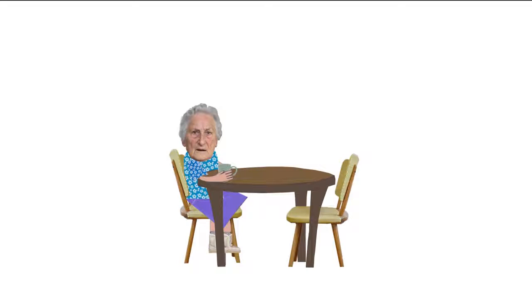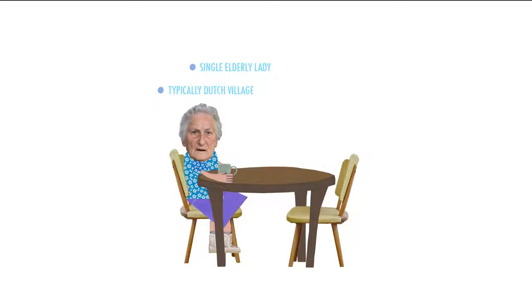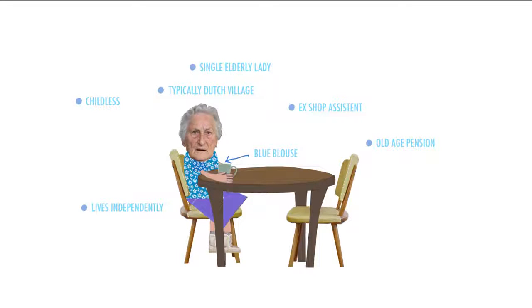I would like you to meet Mrs. Molinar. Mrs. Molinar is a single elderly lady. She lives in a small, typically Dutch village. She has worked her whole life as a shop assistant in a clothing shop. She is childless. She receives old age pension. She lives quite independently. And she's wearing a blue blouse. And her name is Fransje.